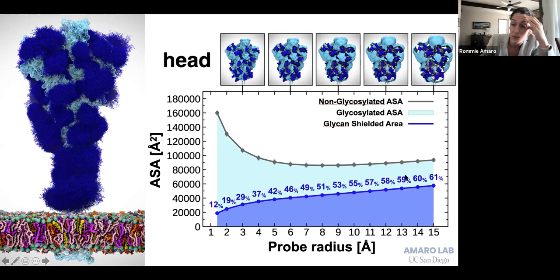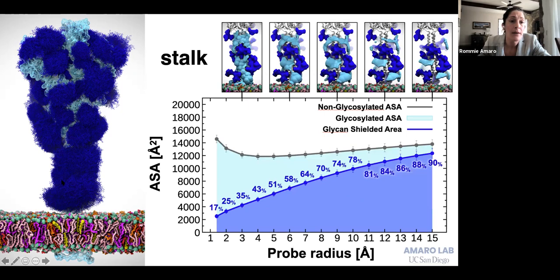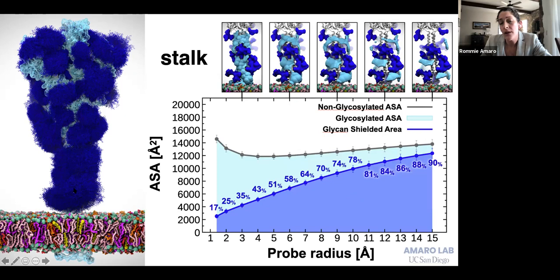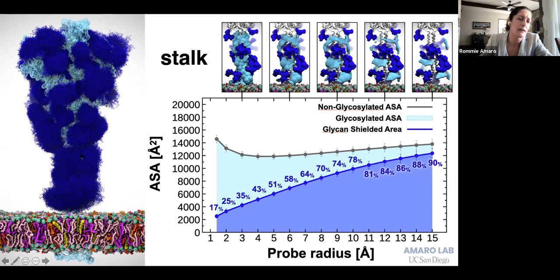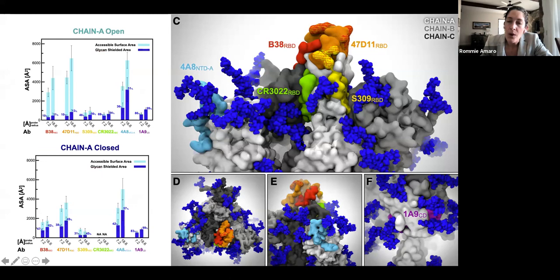We did the same accessible surface area analysis for the stalk, and you can see how well shielded the stalk is, especially for binding of larger molecules. This is interesting because the stalk is actually one of the most conserved regions across the beta coronavirus family — it could represent a place where broadly neutralizing vaccines or antibodies might target. However, one should consider competing effects from the glycans, which may diminish the availability of binding to those regions. We can also use these simulations to analyze where neutralizing antibodies are binding and how glycans affect their footprint.